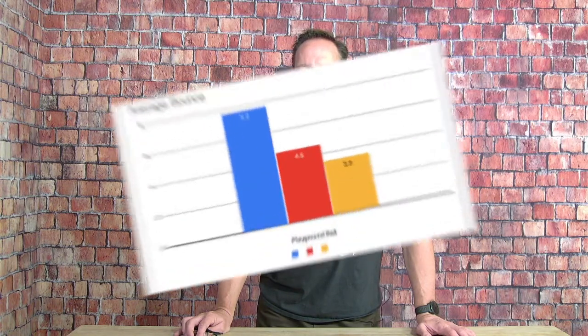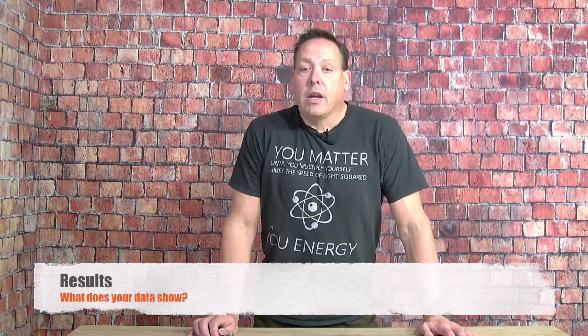Third, you will need to create an average for each column of data. Averaging eliminates mistakes you may have accidentally introduced. Add up all your data for each type of ball and divide by 10, assuming you performed 10 drops. Don't be afraid of your data, even if it's telling you something you didn't expect. You should also turn your data into a graph — maybe a bar graph showing the average height of each ball's average bounce. Graphs make it easier for people to read your table and understand what you tested. Fourth, look at your data including the averages and write a results statement — a sentence or paragraph that clearly states what your data is showing.